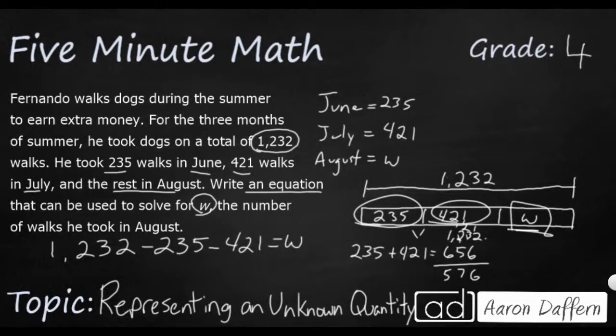So that's how we can write an equation. If we take our total, and then we do subtraction twice to find what our missing number is, 576. Real quick, let's just double check to make sure we have the right answer.